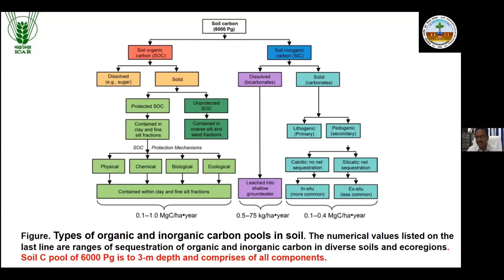Looking at this chart, soil carbon can be divided into two parts. Total soil carbon — if you look at only three meters of soil depth, you'll find 6,000 petagrams of carbon in the world. Soil organic carbon is the most important part for agriculture. Within soil organic carbon there are two types: dissolved organic carbon — soluble sugars or soluble carbohydrates in soil solution — and carbon in a solid phase.